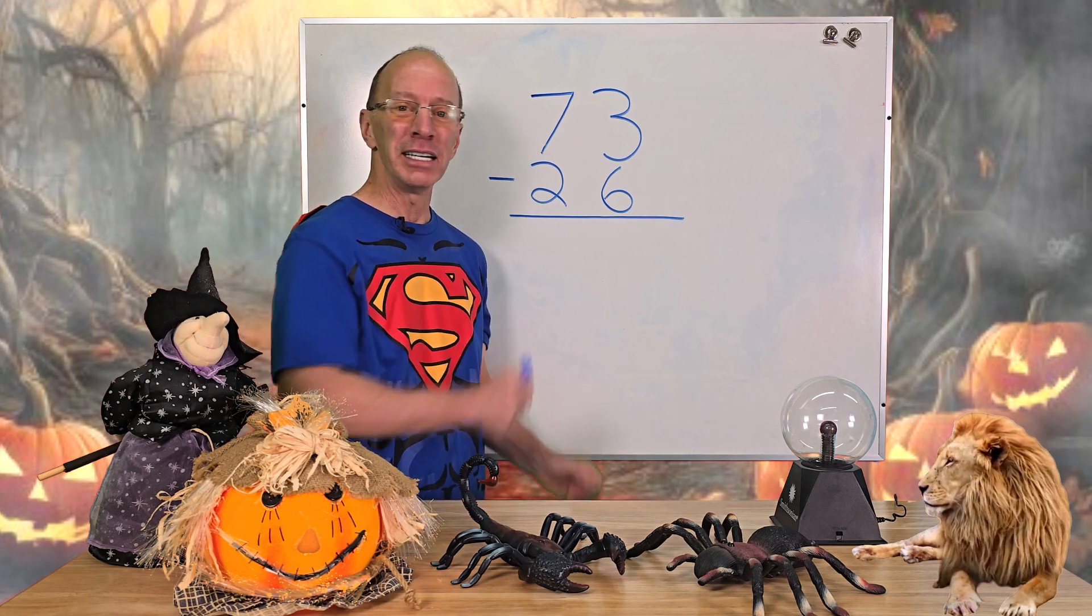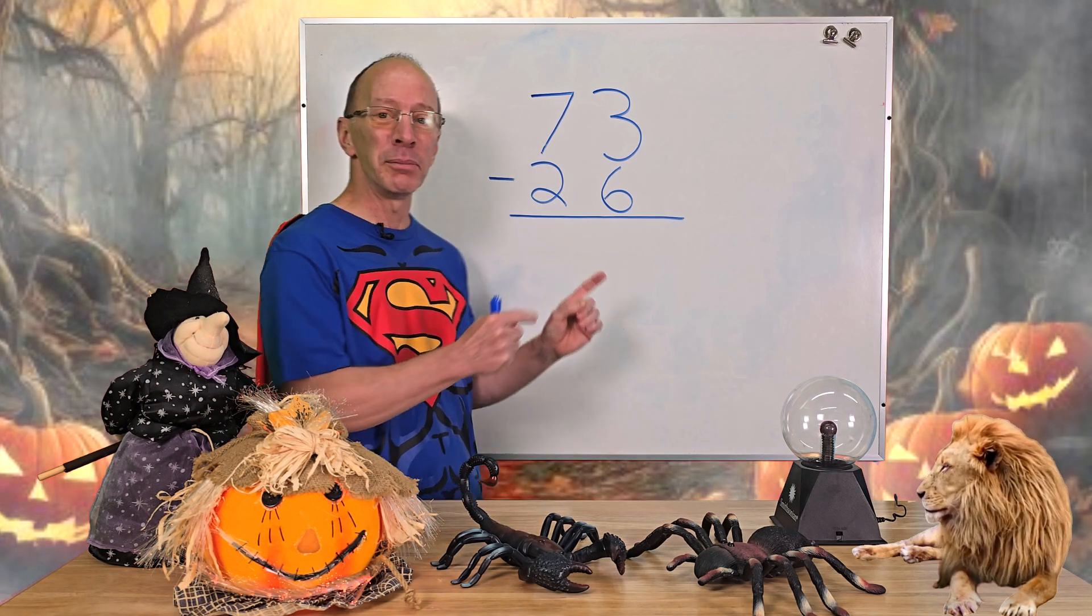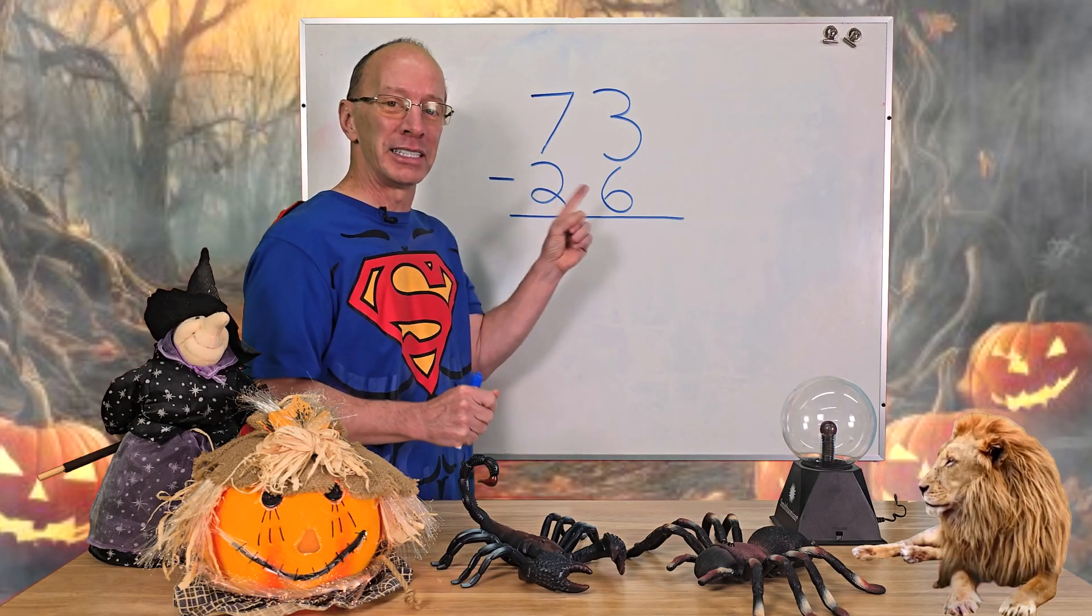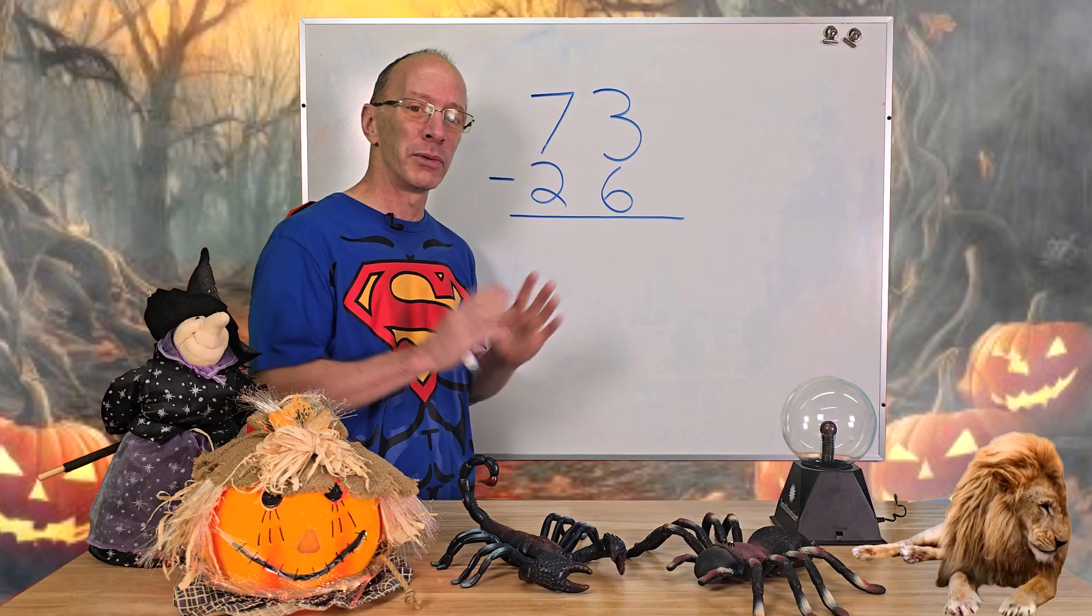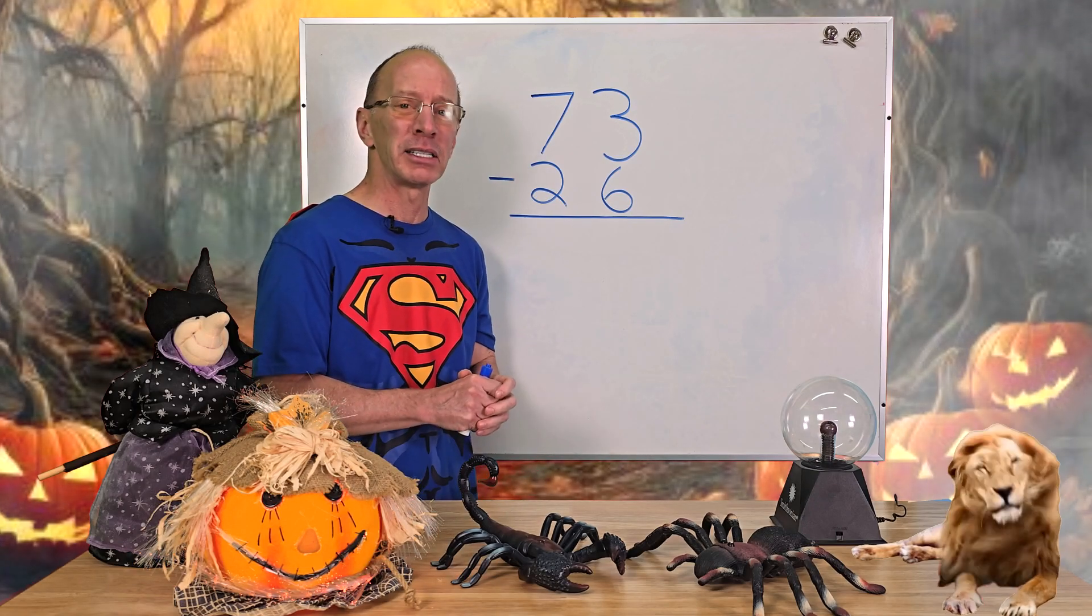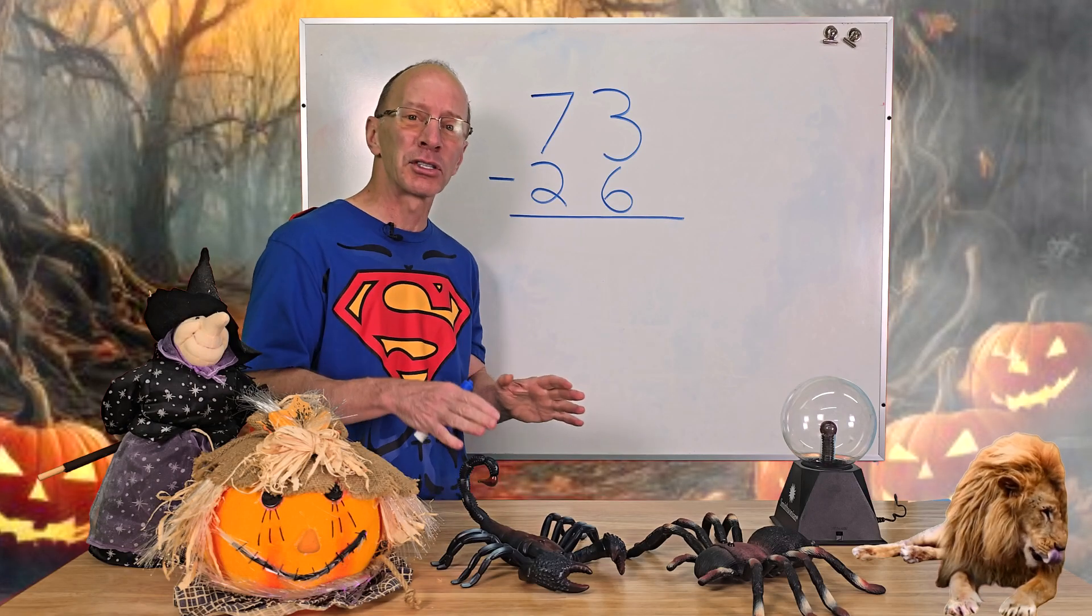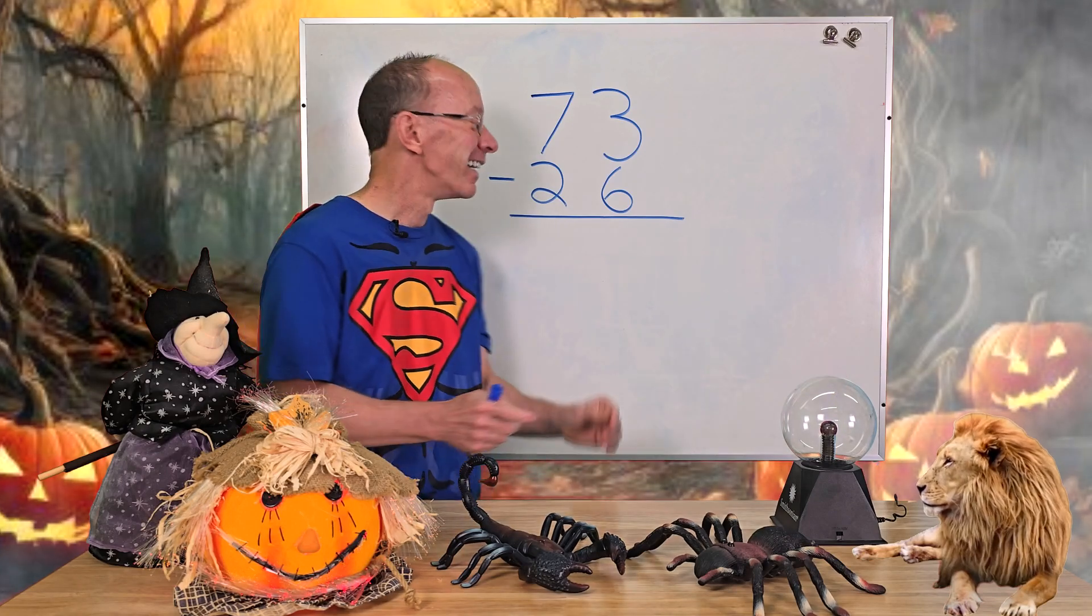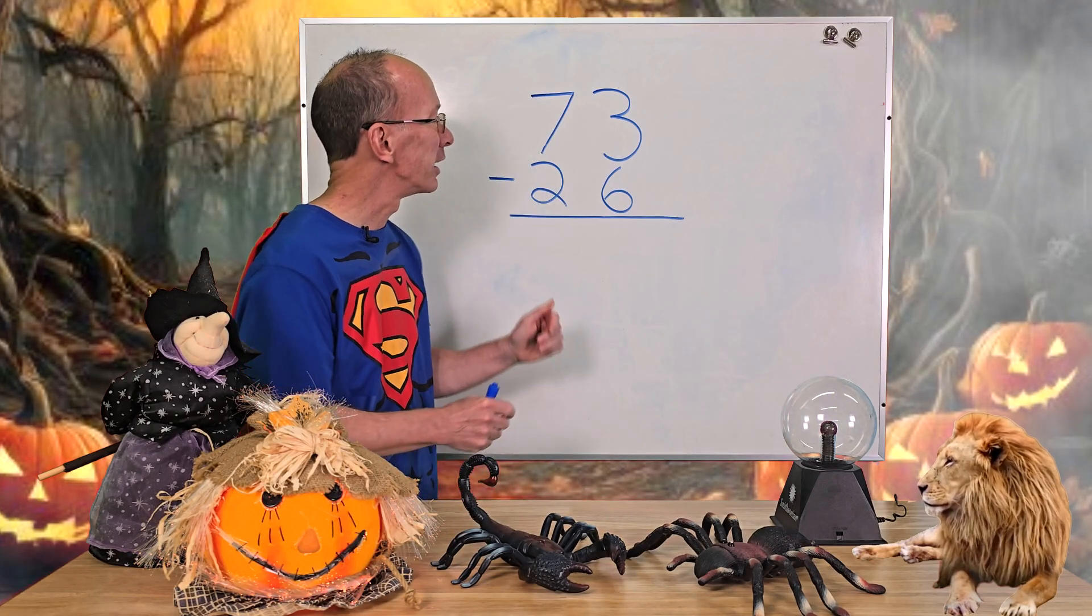Hey, welcome to our Halloween math special. That's right, we're going to be doing some scary math problems. We're going to be doing double digit subtraction with regrouping, but don't worry, don't get too scared out there. We're going to take it step by step, easy, cheesy, lemon squeezy, and along the way we're going to have a little fun. Check that out. Isn't that cool? All right, let's take a look at our first problem right here.